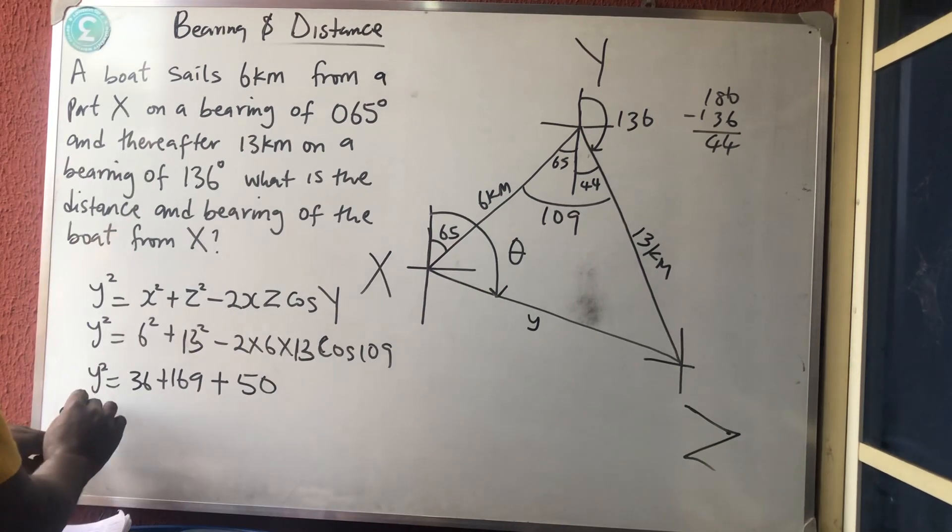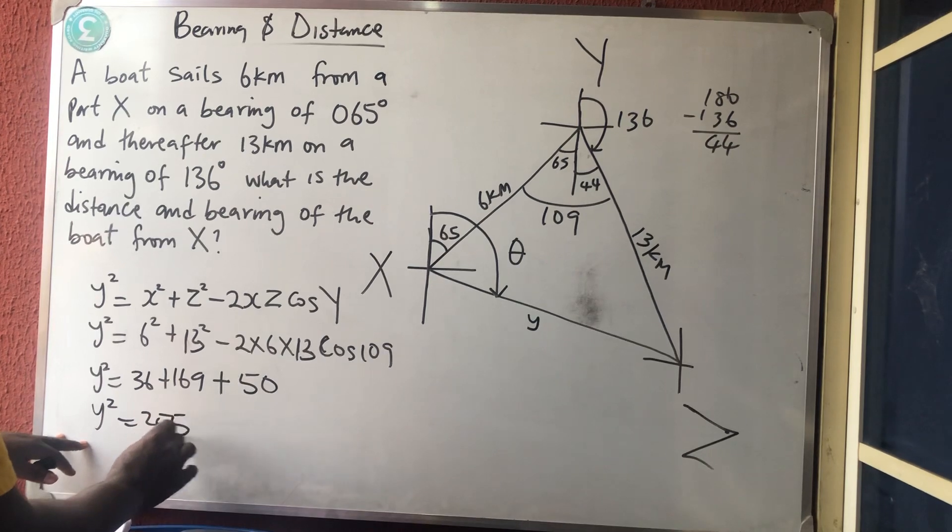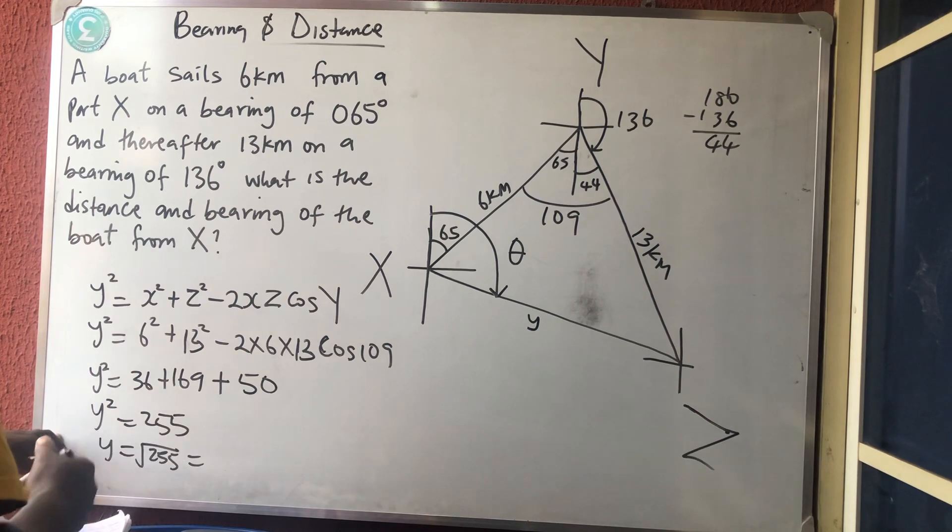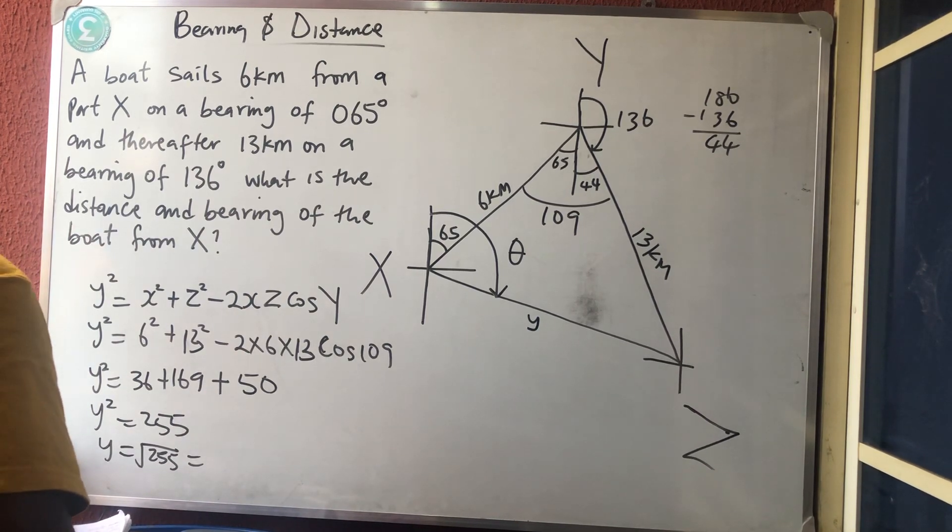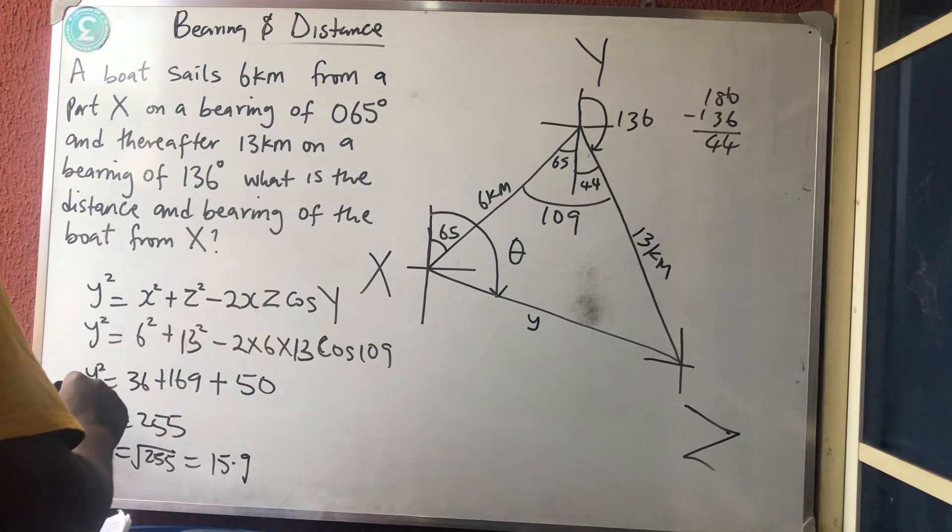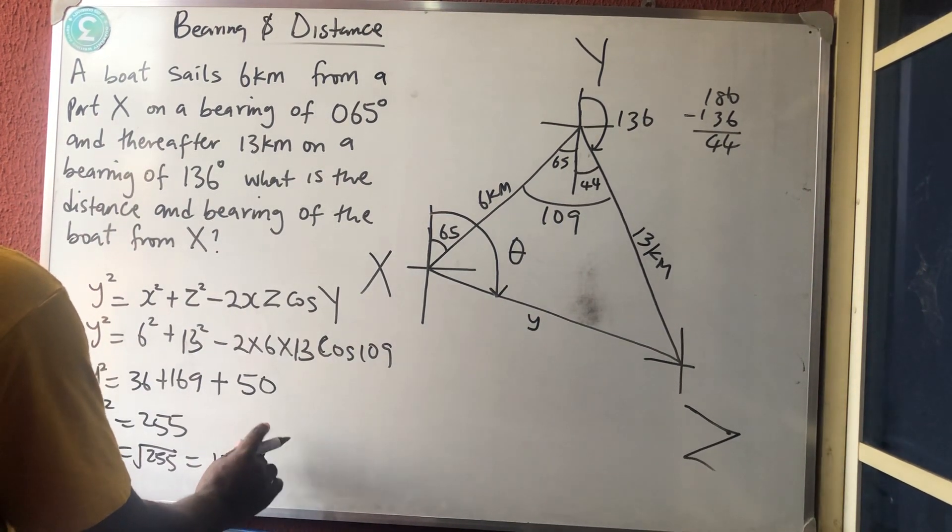So my y² is equal to 255. So y is now what? The square root of 255, which is equal to 15.9. So that is the distance between them, 15.9 kilometers.